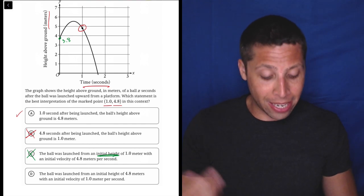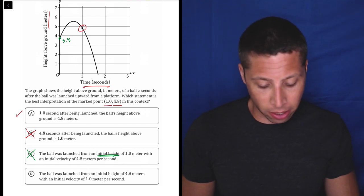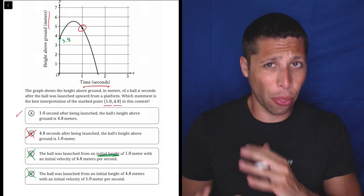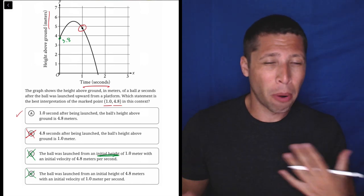And then D, the ball was launched from an initial height of 4.8 meters with an initial velocity of 1.0. So again, initial height is just wrong here. Initial velocity, I don't think is really ever going to be part of this.